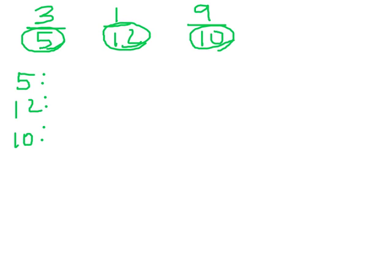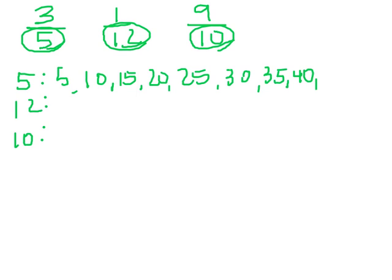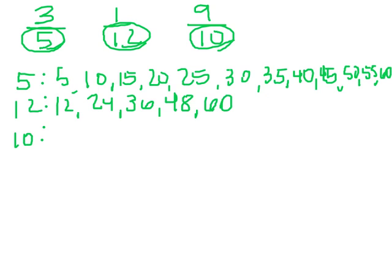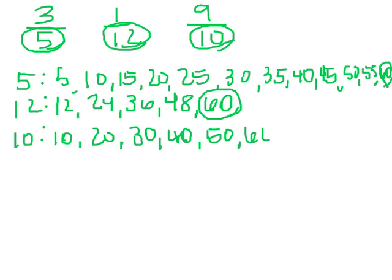I write out the multiples of those numbers until I find one that's in common. Counting by fives: 5, 10, 15, 20, 25, 30, 35, 40, 45, 50, 55, 60. Counting by twelves: 12, 24, 36, 48, 60 — I see one that's in common! I said sixty when counting by fives and sixty when counting by twelves. Counting by tens: 10, 20, 30, 40, 50, 60 — yes! So the denominator they're going to have in common is sixty.